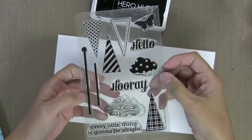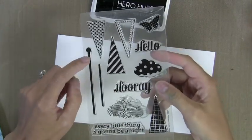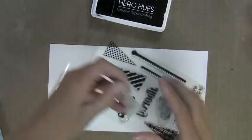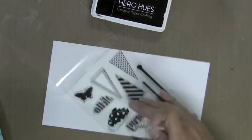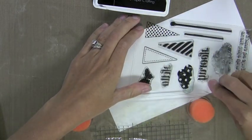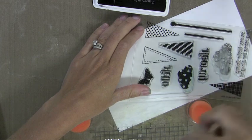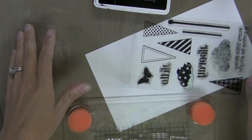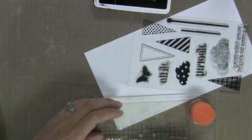So this is one of the new Studio Calico Hero Arts clear sets. This one's called Hooray and I like that it's got these little flag banners and they're supposed to be used for flags but I'm going to actually use them as Christmas trees on this card. I like to use stamps in different ways so I can get more out of them. Kind of justifying spending the money on my stamp sets. So instead of flags we're going to be creating some Christmas trees.